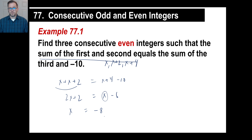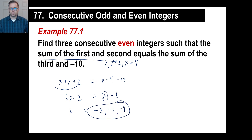So if they say three consecutive even integers starting from negative 8 going right on the number line, the next one will be negative 6, and the next one will be negative 4. So your set of answers is negative 8, negative 6, negative 4.